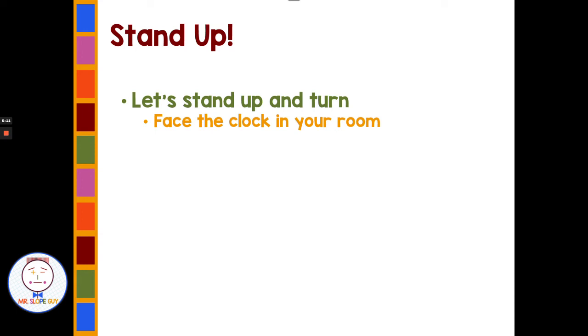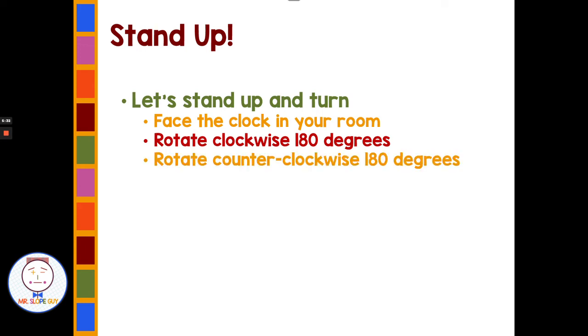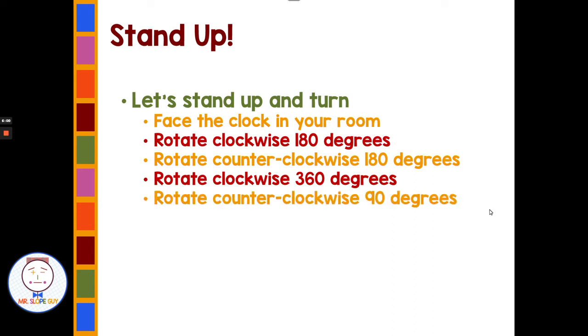I want you guys to stand up and face the clock in your room. Now I want you to rotate clockwise 180 degrees. You should be facing the opposite way of the clock - your back should be to the clock. Now turn counterclockwise 180 degrees from where you were at. If you turn counterclockwise, we're turning the opposite direction, and you're back to facing the clock. How about rotate clockwise 360 degrees? That should have spun you to the right, all the way back to where you started. You guys can have a seat. Great job with that.